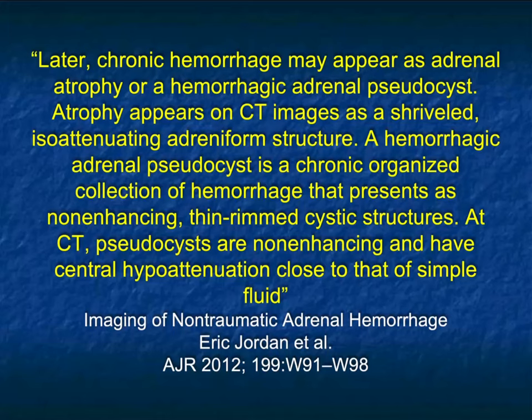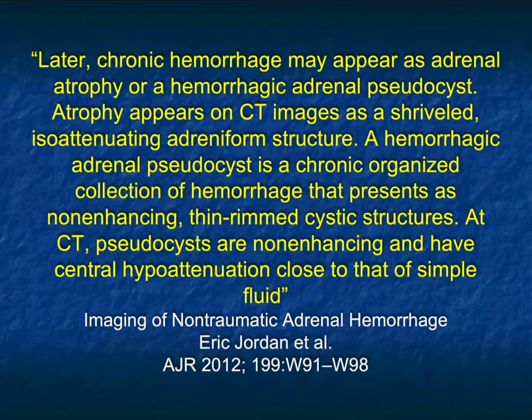Chronic hemorrhage can appear in many different ways. If you think about hemorrhage in any organ — kidney, liver — it can basically go back to near normal. But in the adrenal, you'll often have calcification around the rim, so you can have reasonably large lesions with rim-like calcification. When I see a cystic adrenal lesion with rim calcification, I'm usually thinking about old hemorrhage. The adrenal glands can also become atrophic with dense calcification, unilateral or bilateral, looking very similar to what you might expect with TB.